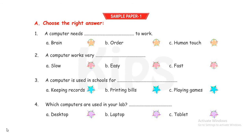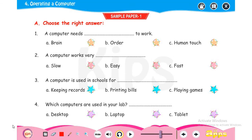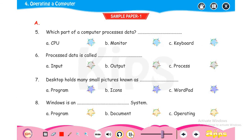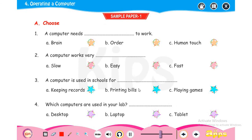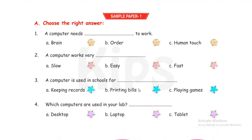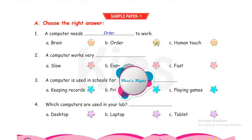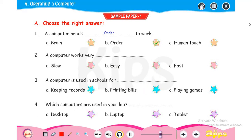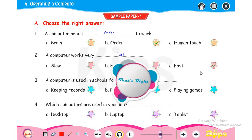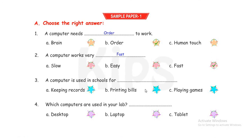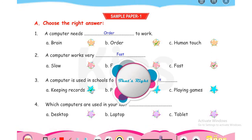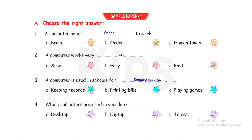We start with 'Choose the Right Answer.' First one: a computer needs to work — a computer needs orders to work. A computer works very fast. Next: a computer is used in a school for keeping records, meaning student records, school records, teacher records — every record is kept with the help of computers in a school.